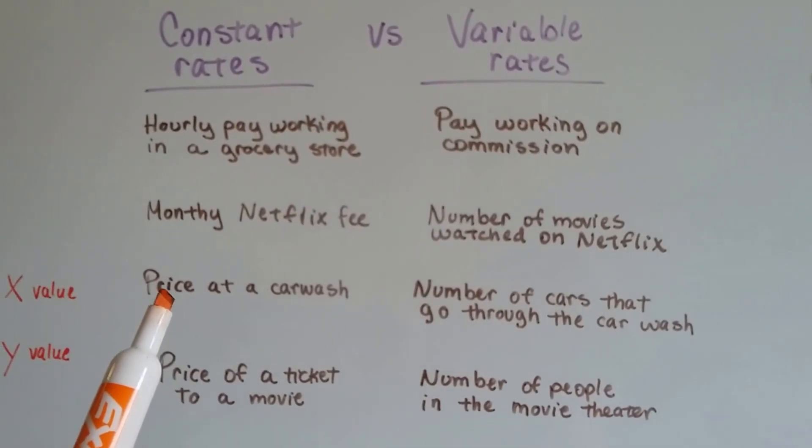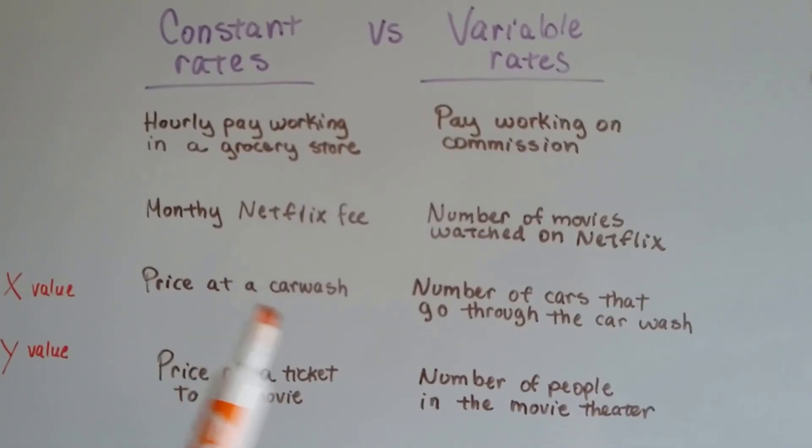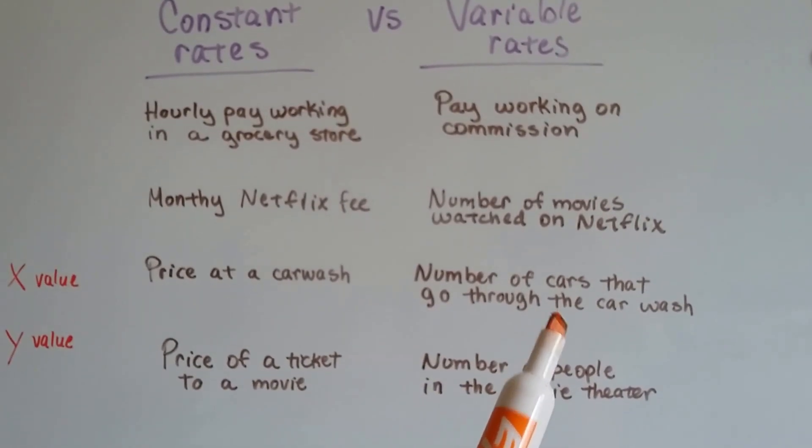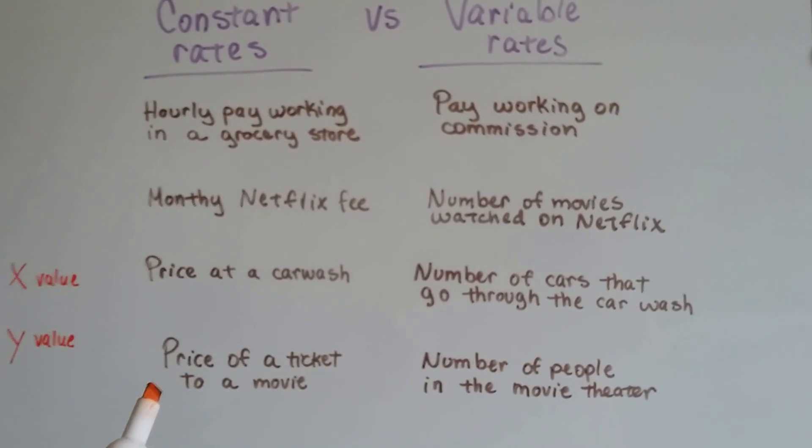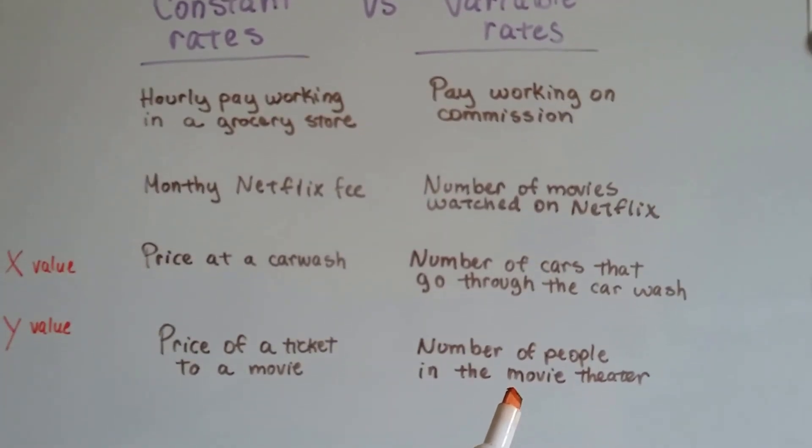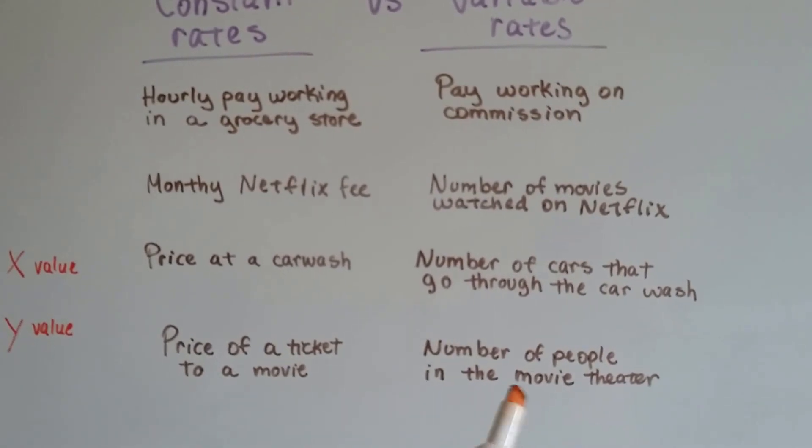A constant rate would be the price for a car wash, but the variable rate would be the number of cars that go through that car wash. And a constant rate would be the price of a ticket to a movie, and a variable rate would be the number of people that are in the movie theater. That's not always going to be the same, is it?